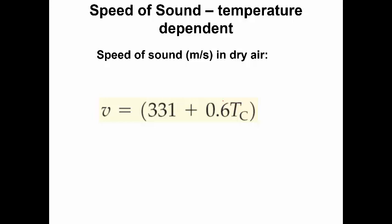The speed of sound is temperature dependent, with a simple equation. The temperature T_C must be in Celsius. The formula is: v = 331 + 0.6·T_C (in m/s), where 331 m/s is the speed at 0°C.